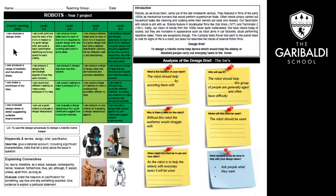The first task is about analysing a design brief. The brief is to design a robotic home help device which would help the elderly or disabled people carry out everyday tasks in the home. This task requires you to read through that information and put answers in the spaces for each of the questions. There is a sentence starter provided, and I'd like you to try and complete those.